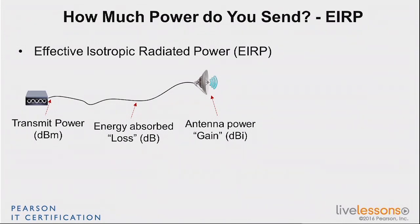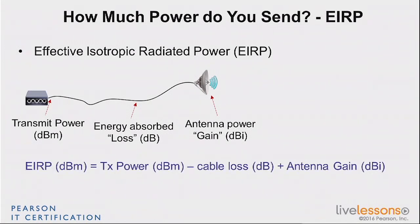We have the isotropic word here because we use a dBi scale, and also because it compares the energy you focus in one direction — with a directional antenna — to what an isotropic antenna would radiate in all directions. We ask: how much more are you sending in that direction because of that directional antenna? That's the EIRP. So it's the equation: what you send out of the access point, minus what you lost in the cable, plus the gain of the antenna. That's the EIRP.